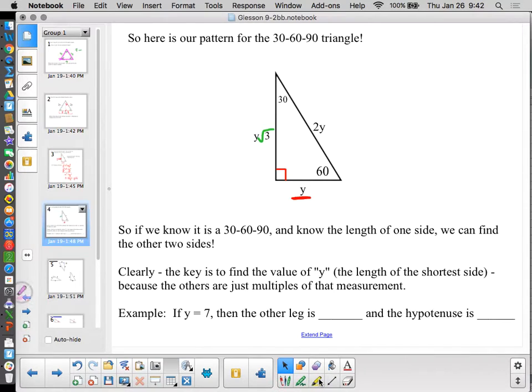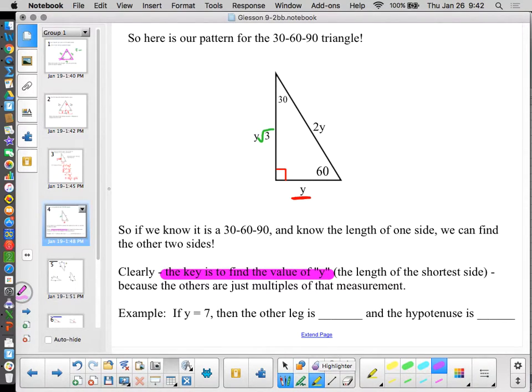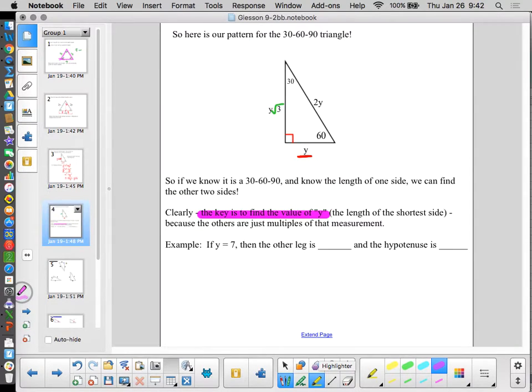As it says down here, clearly, the key to doing this is to find the value of y, the length of the shortest side. The others are just multiples of that measurement. So if y equals 7, if this side was 7, the other leg has to be 7 times the square root of 3. And the hypotenuse is 2 times the short side. 2 times 7 is 14.